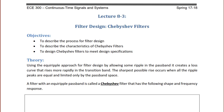Using the equal ripple approach for filter design, by allowing some ripple in the passband, it creates a loss curve that rises more rapidly in the transition band. The sharpest possible rise occurs when all the ripple peaks are equal and limited only by the passband space. A filter with an equal ripple passband is called a Chebyshev filter, and it has the following shape and frequency response.